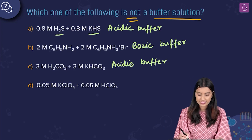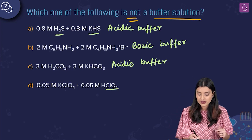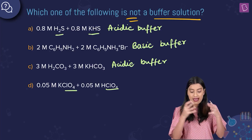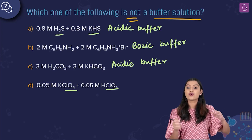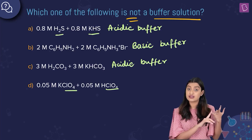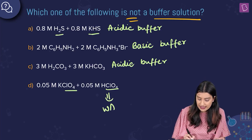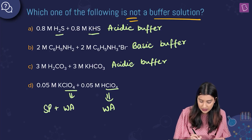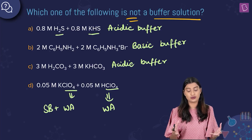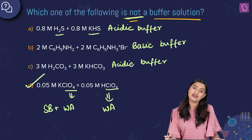Option D: 0.05 M KClO₄ + 0.05 M HClO₄. HClO₄ is perchloric acid — one of the strongest oxyacids of chlorine, where chlorine is in the +7 oxidation state, making it a strong acid. A buffer requires a weak acid with its salt; since HClO₄ dissociates fully, this shows no buffer action. Option D is not a buffer, which is the right answer.